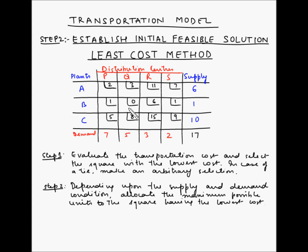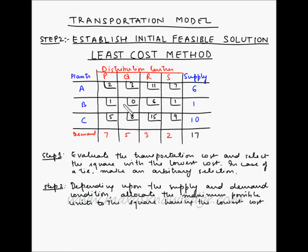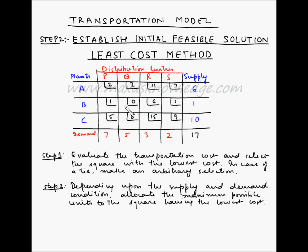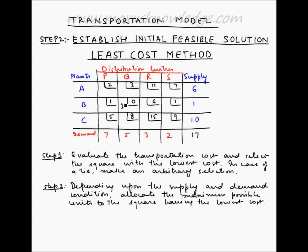For the square BQ, let us evaluate the supply and demand condition. The distribution center Q has a demand of 5 units, but the plant B can supply only 1 unit. So definitely the allocation cannot be more than 1, as you cannot ship more than 1 unit to the warehouse Q from plant B. Here we will allocate 1 to the square BQ.